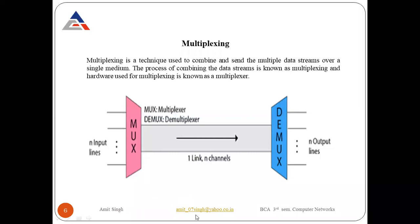The next topic is multiplexing. Multiplexing is a technique used to combine and send multiple data streams over a single medium. The process of combining the data streams is known as multiplexing, and the hardware used for multiplexing is known as a multiplexer. Basically, it is a process of combining multiple signals when we have a single transmission media but a number of users who want to send data.